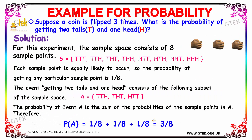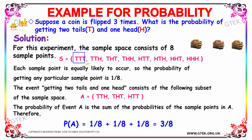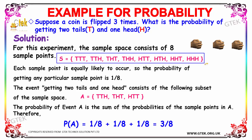Let's go to another example. Suppose a coin is flipped three times — what is the probability of getting two tails and one head? Since the coin is flipped three times, the sample space consists of totally eight sample points, such as TTT, TTH, THT, and so on. Each sample point is equally likely to occur, so the probability of any particular sample point is 1/8.